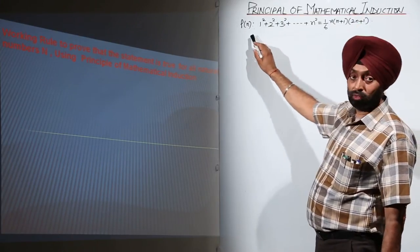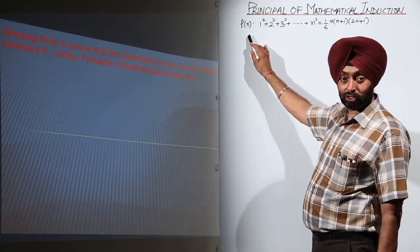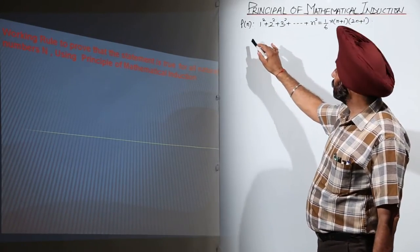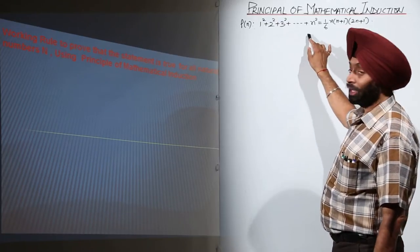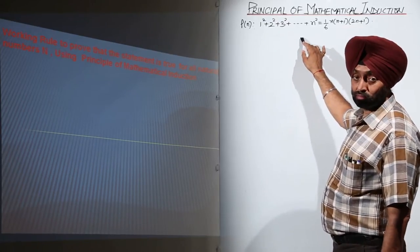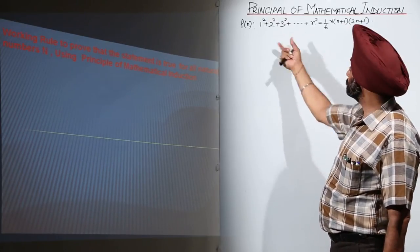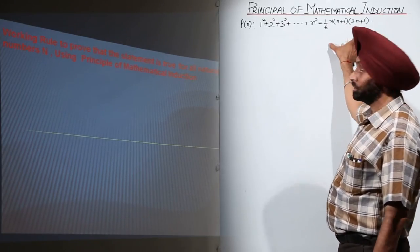The given example is P(n), a statement given by the sum of squares of the first n natural numbers. This is the series and this is the result.